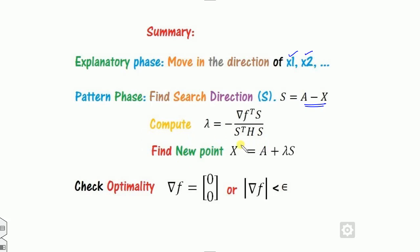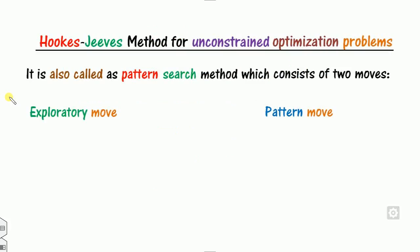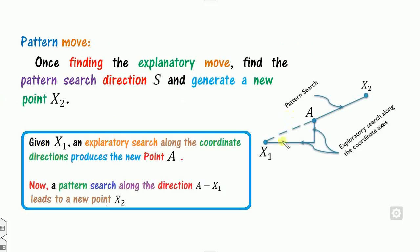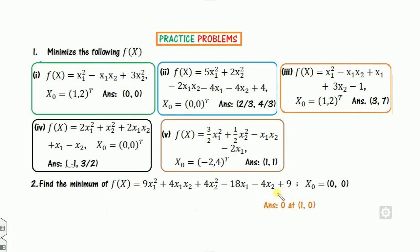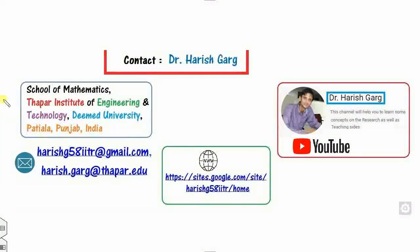In summary, this is the working of the Hooke-Jeeves method: move direction-wise along x1 and x2 one at a time in the exploratory phase, then in the pattern phase find the search direction, calculate lambda (using the quadratic formula if the function is quadratic, otherwise by substitution), and check for optimality. This is one of the simplest methods for finding the optimal point. There are five exercise problems given with answers for you to try. If there is any doubt, you can contact me at any time. Best of luck, students.